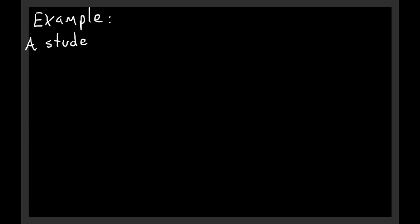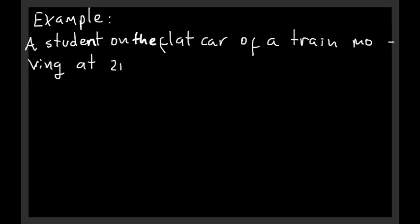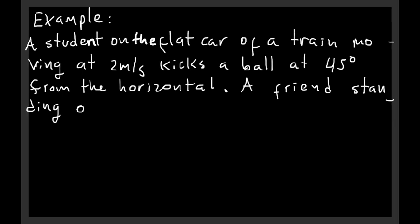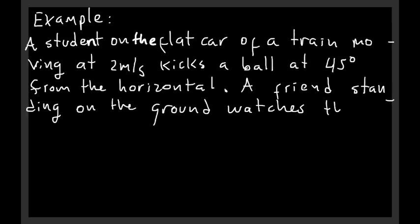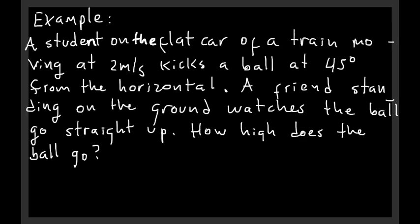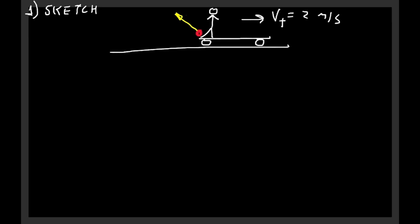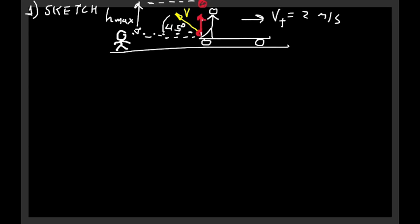Let me show you an example. Let's say you have a student on a flat car of a train, and the train is moving to the right at 2 meters per second. The student kicks a ball at 45 degrees from the horizontal, and there is a friend standing on the ground who sees the ball go straight up. The question is: how high does the ball go? Here we have the student on the flat car kicking the ball at 45 degrees, the train moving to the right at 2 meters per second, and the observer on the ground sees the ball moving straight up and reaching a maximum height H-max.